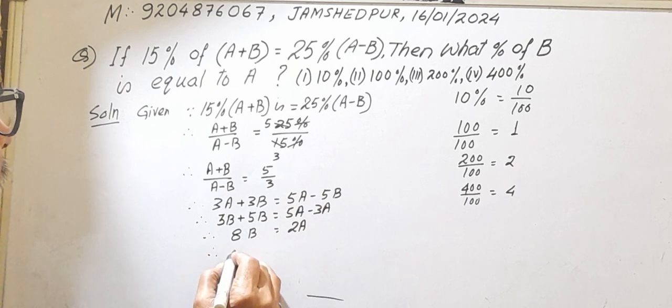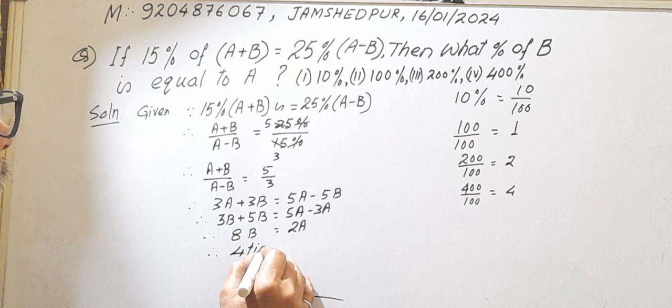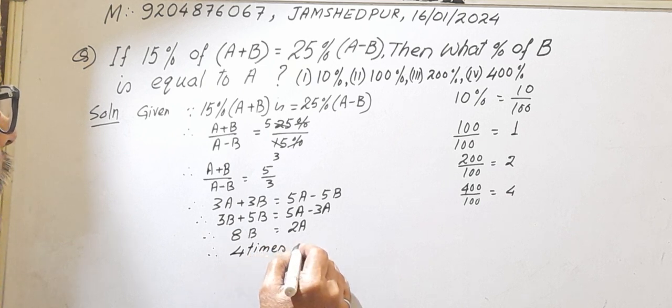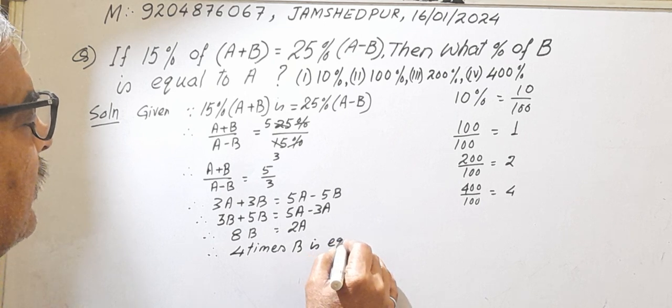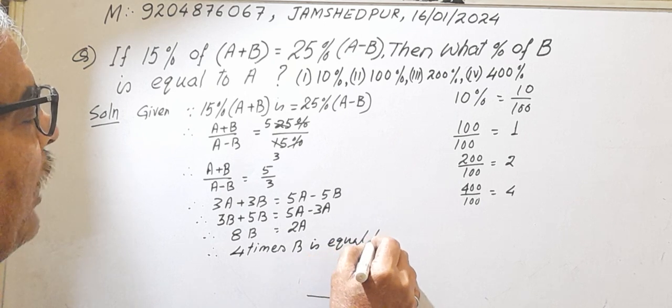The question asked what percent of B is equal to A. Therefore, 4 times B is equal to A.